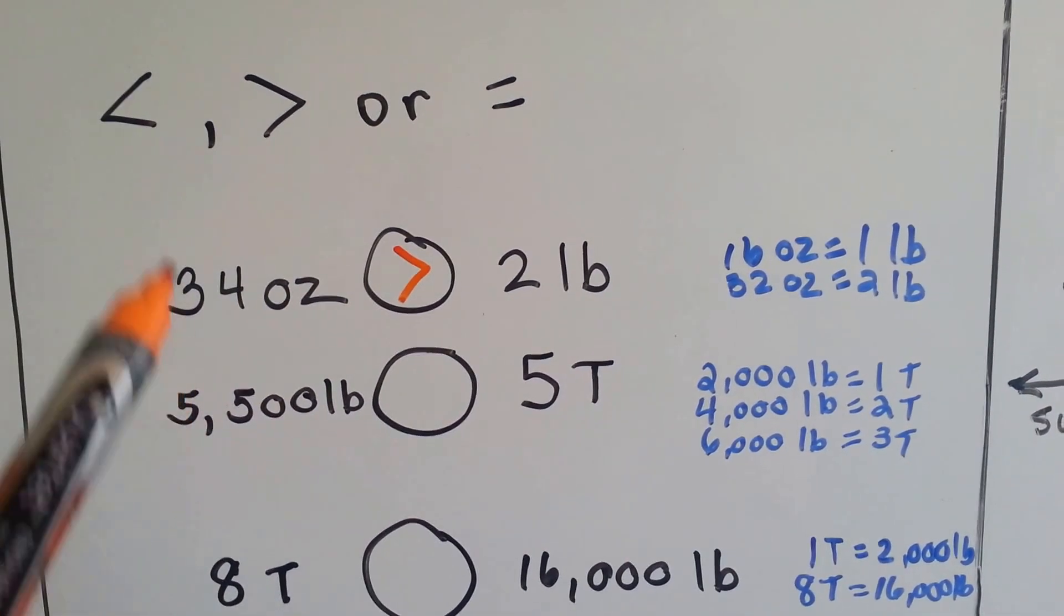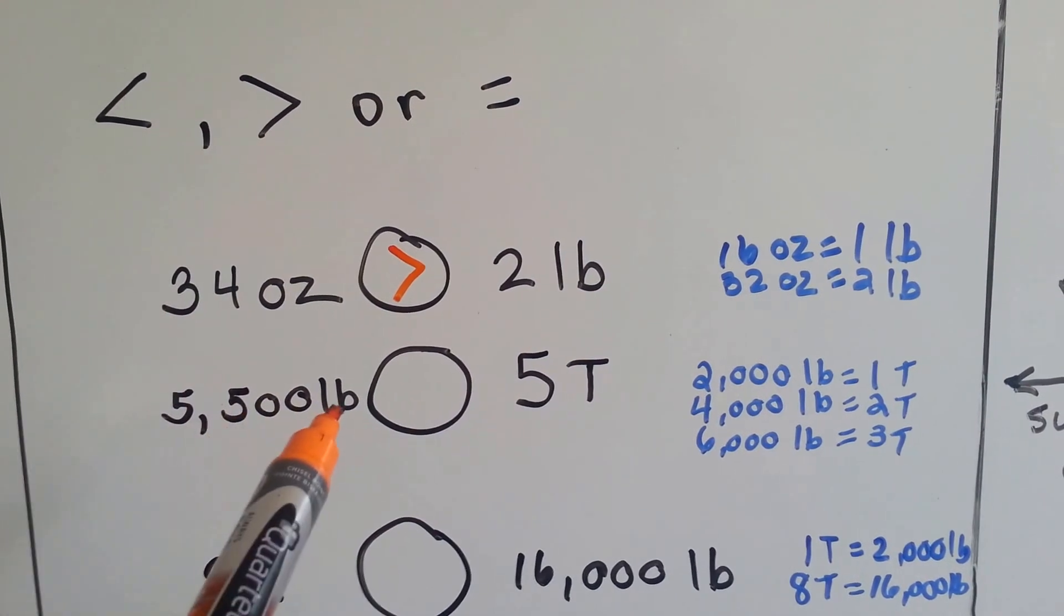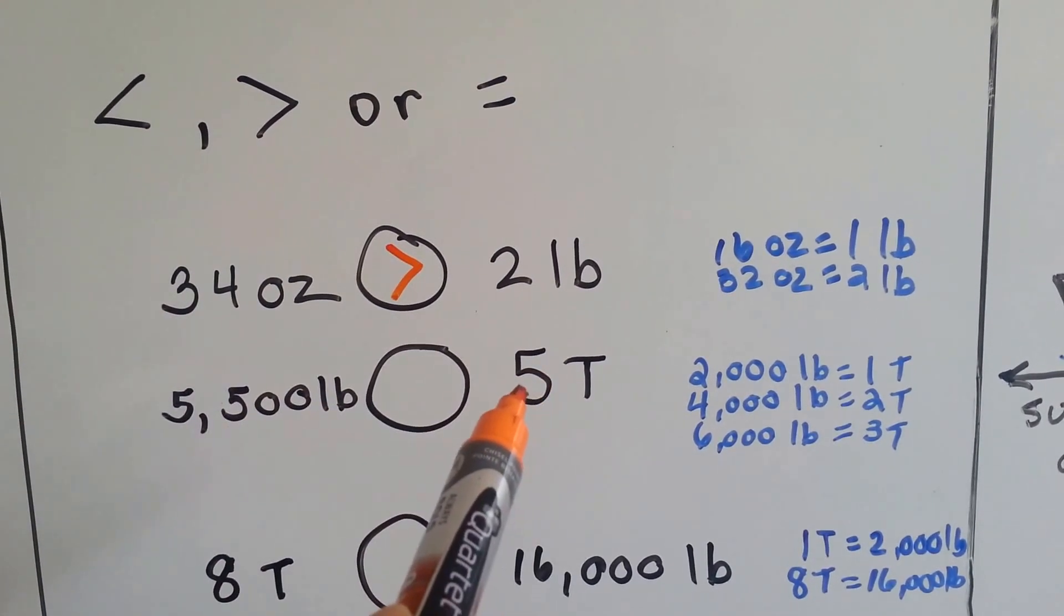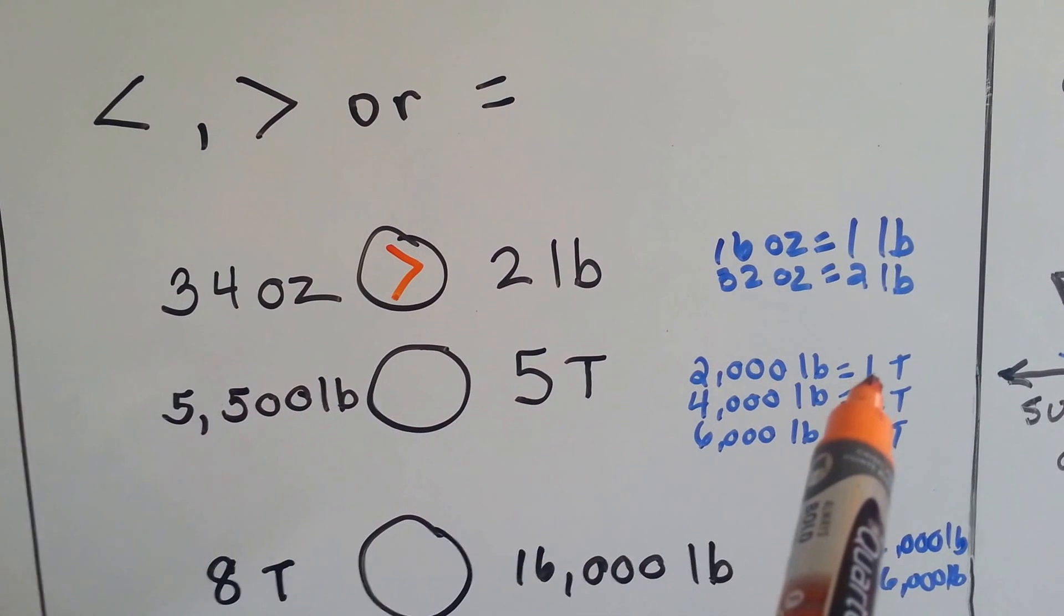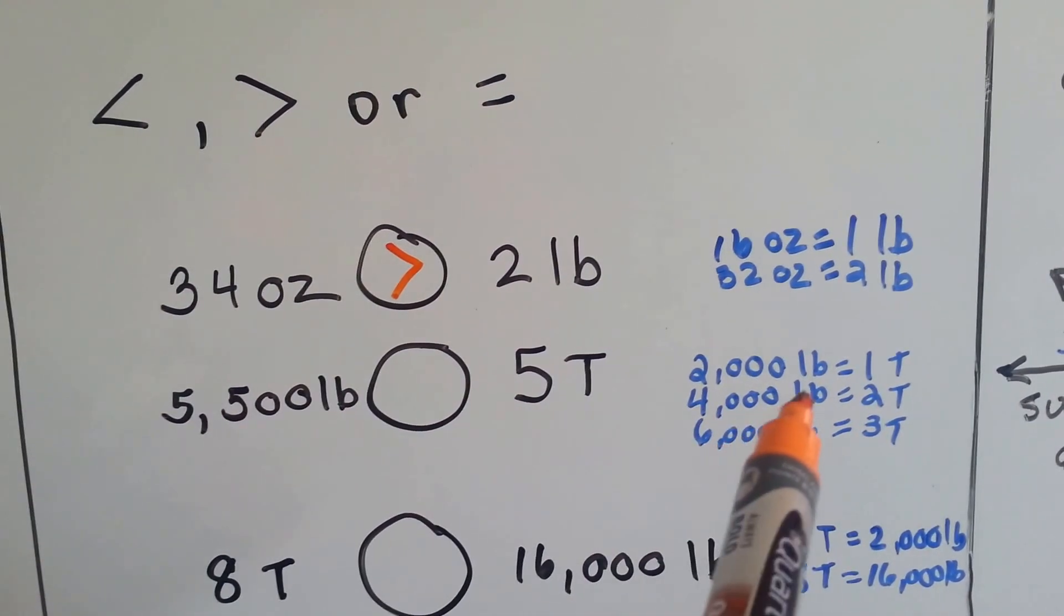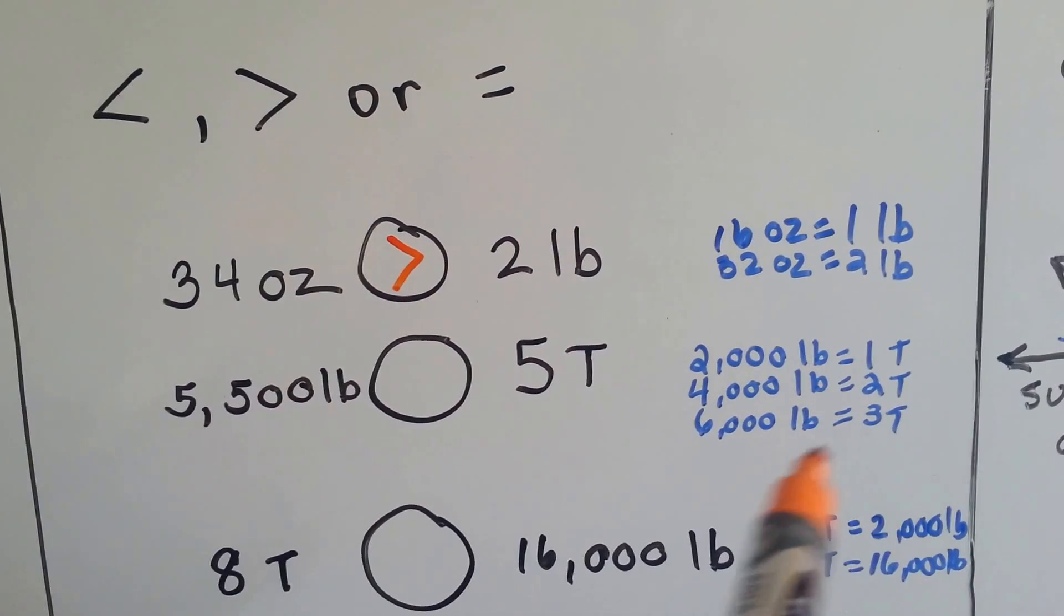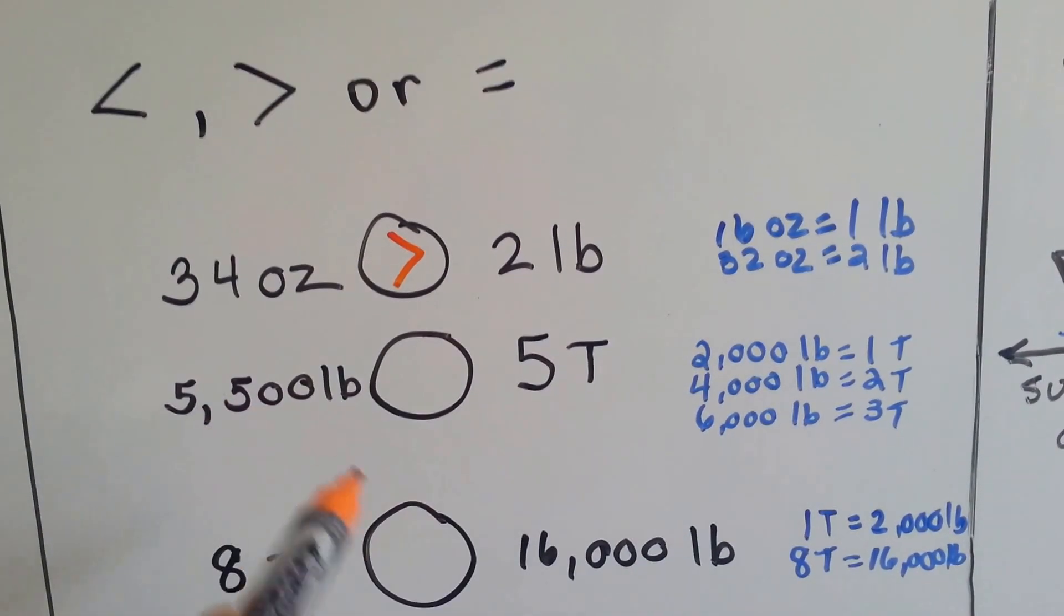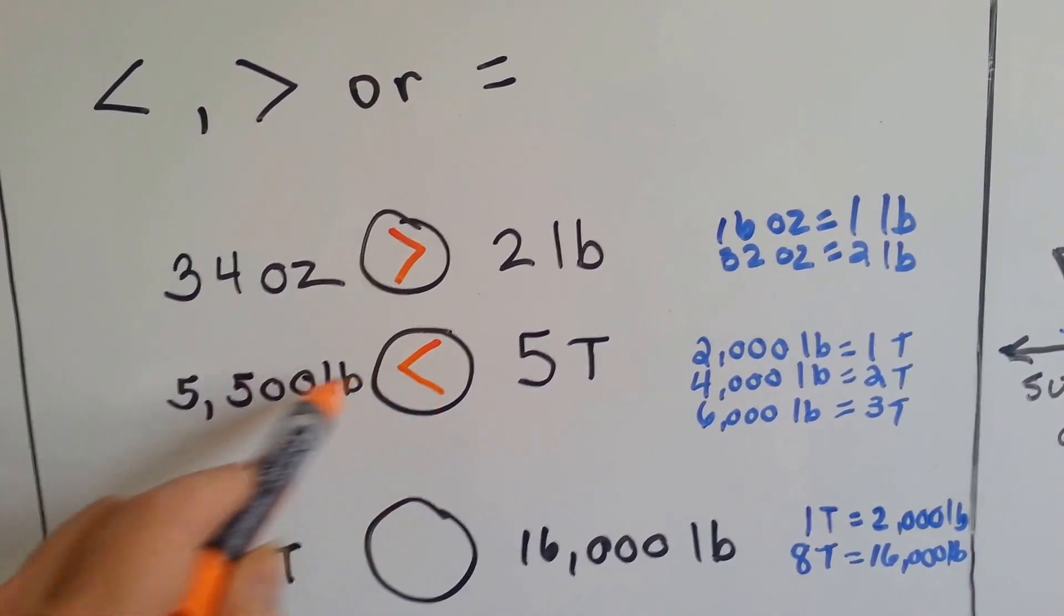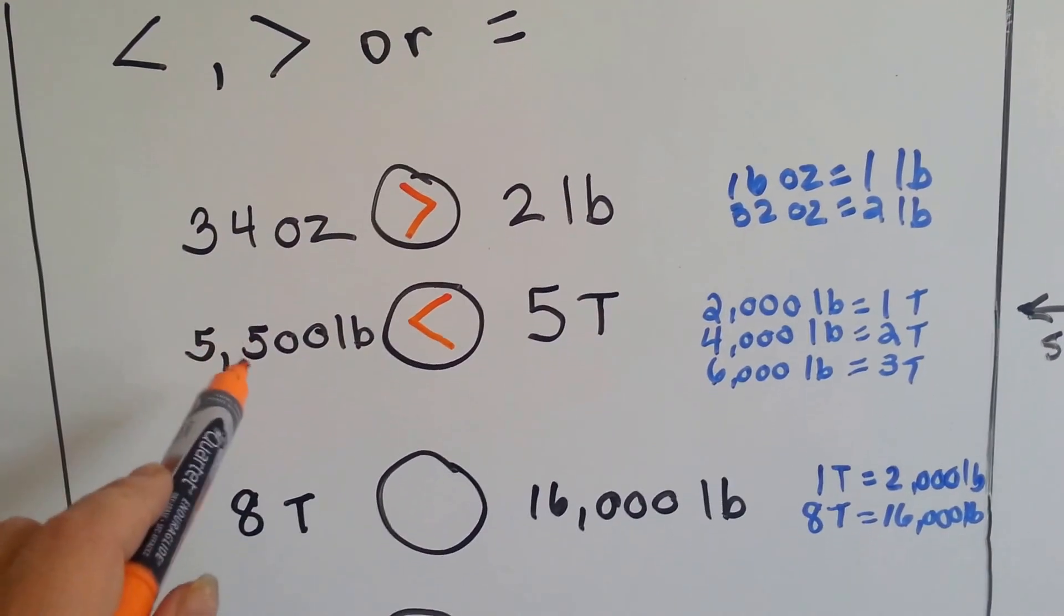Which is less than, greater than, or equal to? 5,500 pounds or 5 tons? Well, 2,000 pounds is 1 ton, so that means 4,000 pounds is 2 tons. That means 6,000 pounds is 3 tons. So guess what? 5 tons is way bigger than 5,500 pounds.